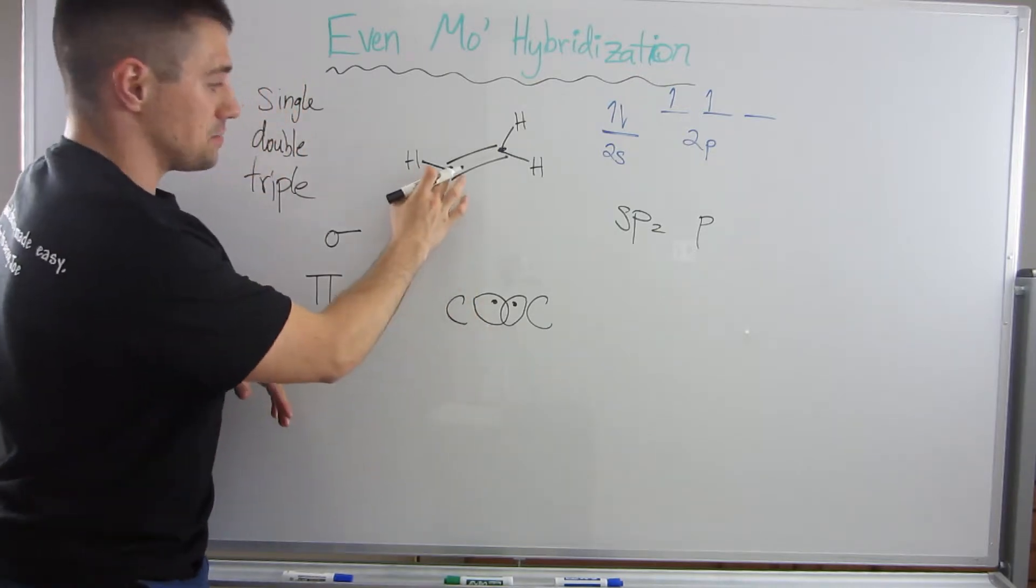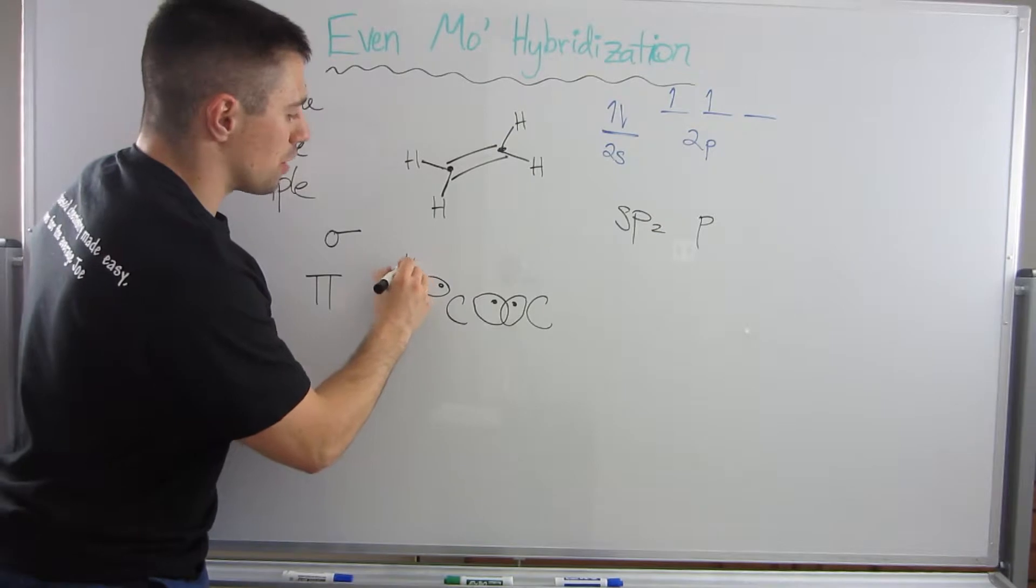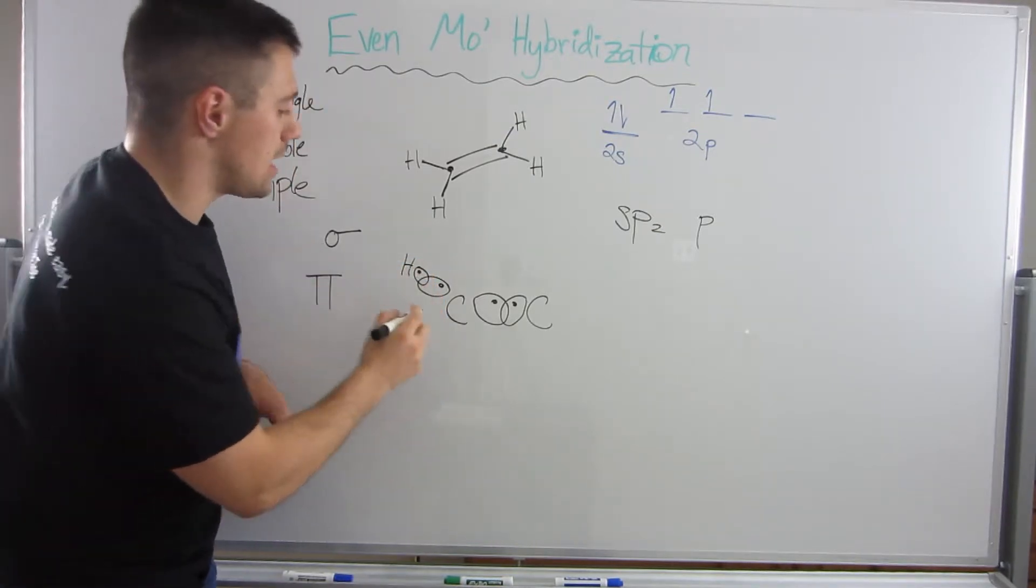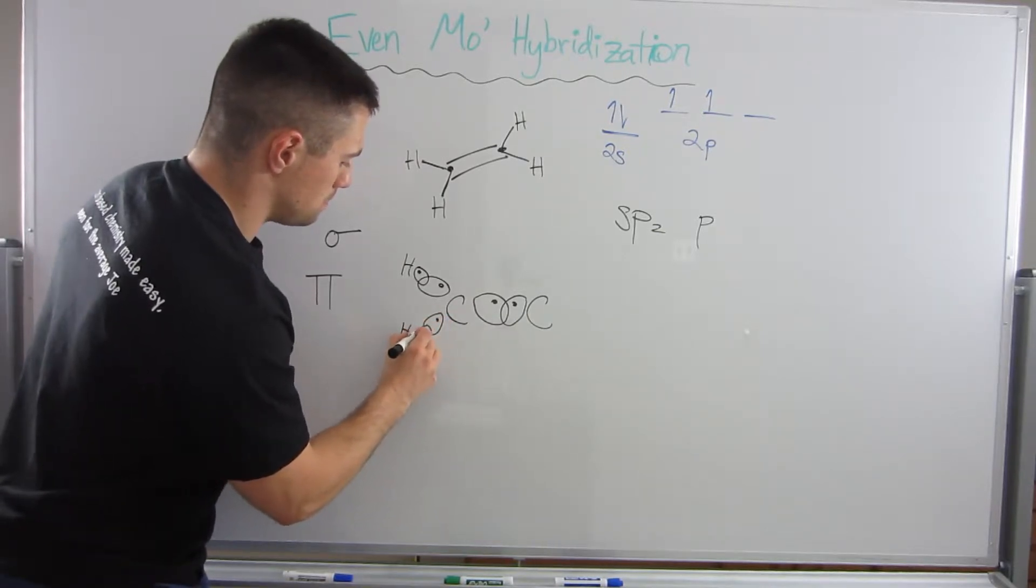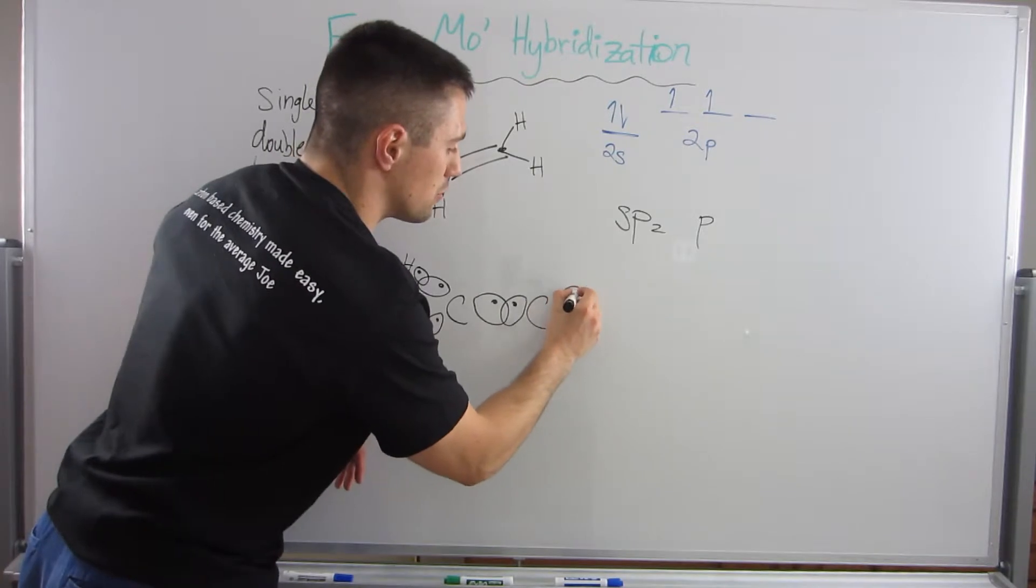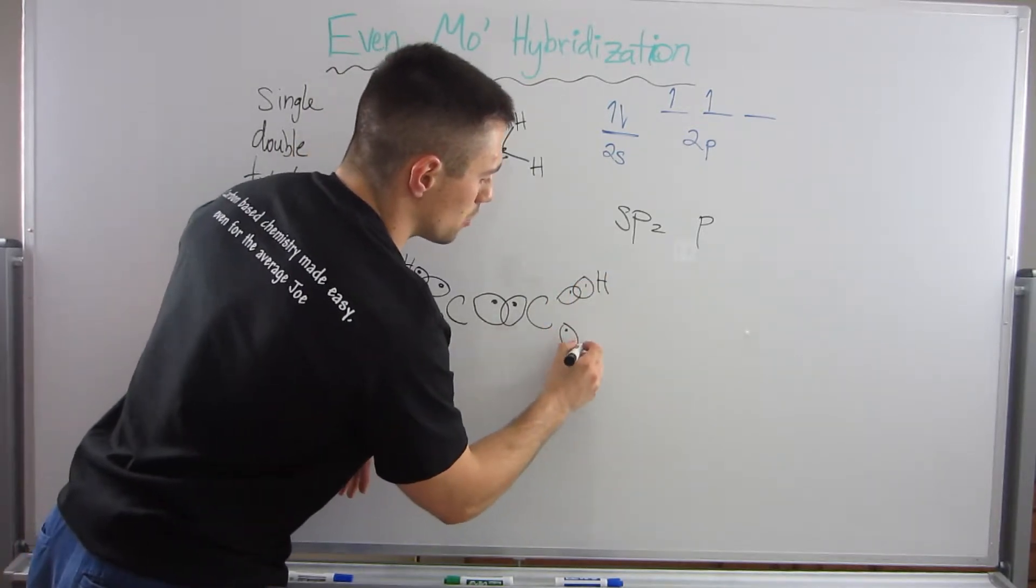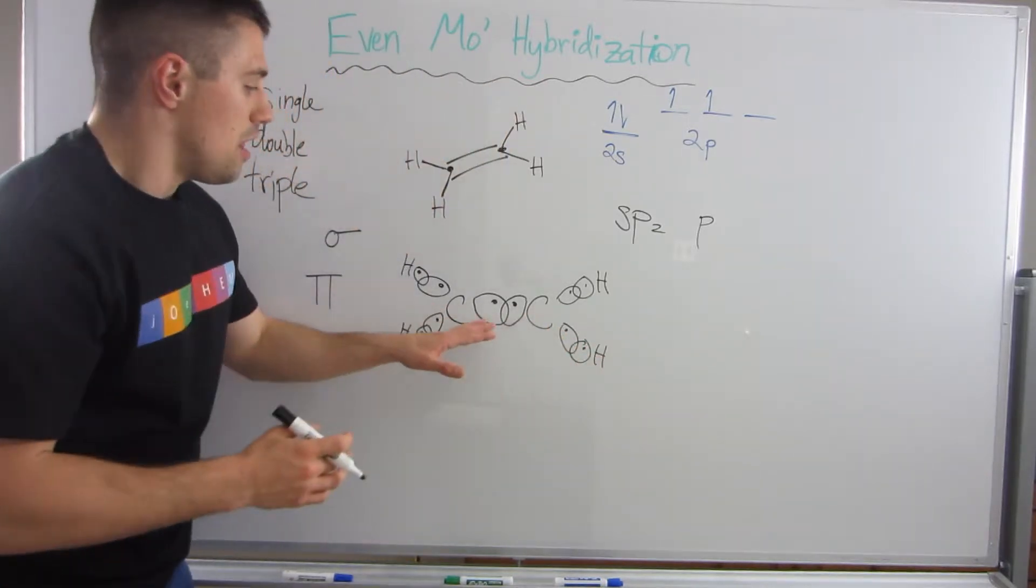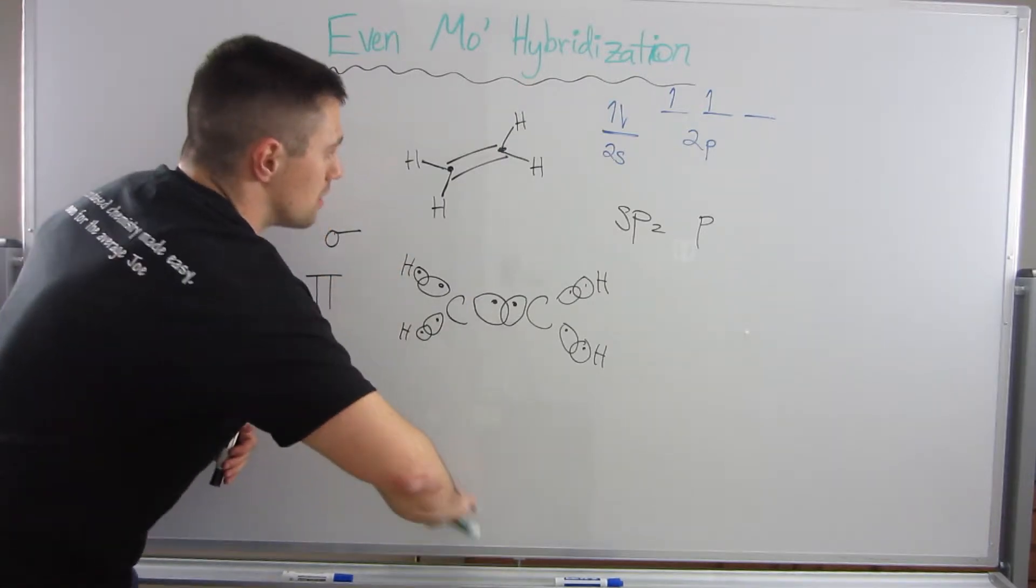If I continue to draw this out, this carbon also has another orbital that overlaps with one of hydrogen's orbitals. They each bring an electron to the table. And equivalently over here, this carbon has orbitals that overlap with hydrogen.